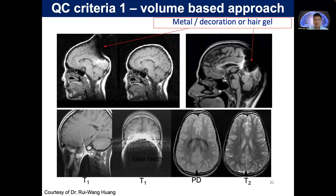You can also see some data — for example, this kind of weird image from metal or decoration or hair gel — and also you can see the dental effect. For this kind of image, you may need to mark it as very poor and remove it from your future analysis.